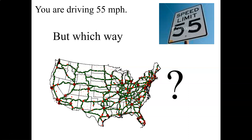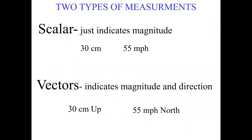If you drive 55 miles per hour for an hour, you're going to end up 55 miles away from where you started, assuming you go in a straight line. But where are you going to end up? The answer is we don't know, because we don't know which way you were headed. So there are two basic types of measurements in science — scalars and vectors — and the difference is that a vector has a direction and a scalar does not.